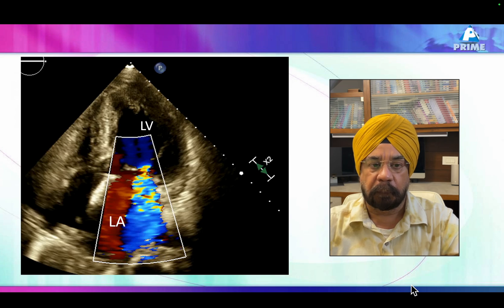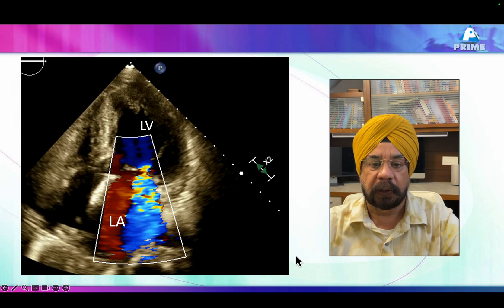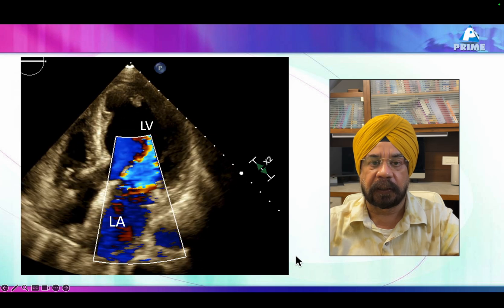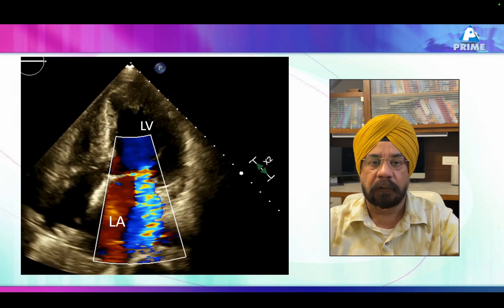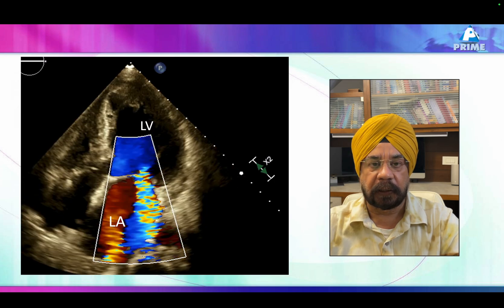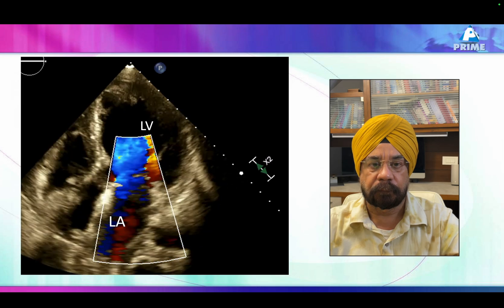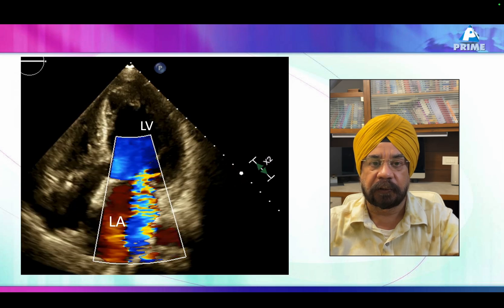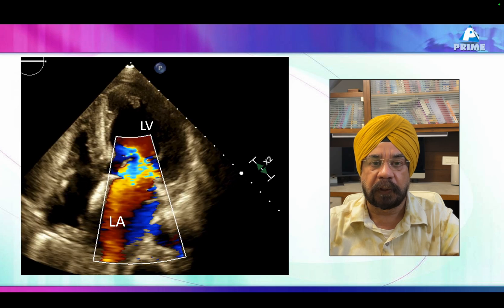This is a case we did a couple of days back. The patient had regional wall motion abnormalities, was hypertensive, had left ventricular hypertrophy, and there was mitral regurgitation. Look at the mitral regurgitation — what is your impression? Do you think that mitral regurgitation is severe? All right, let's find out whether the mitral regurgitation was severe, mild, or moderate.